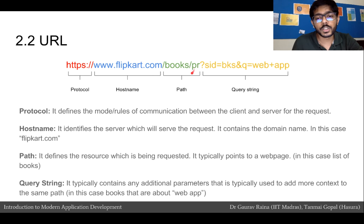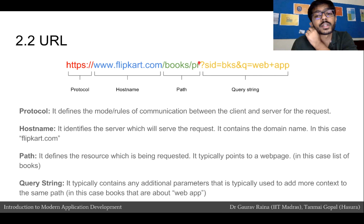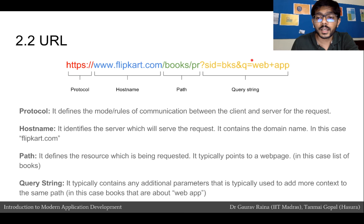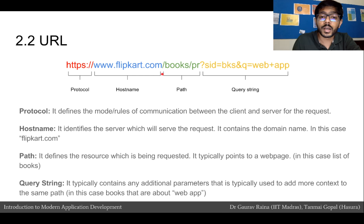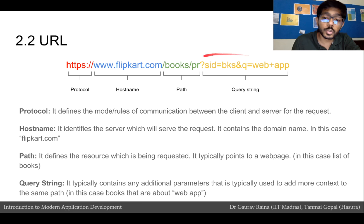The next optional portion of the URL is called the query string, which comes after a question mark symbol. The path is usually separated by slashes, and at the end you may have a portion after a question mark — that is the query string. In our case, the query string contains 'web app'. The query string allows the browser to make a more specific request or pass additional parameters to the server. So all in all, our URL says: using the HTTPS protocol, go to www.flipkart.com, fetch the books resource, and fetch those books relevant to 'web app'.